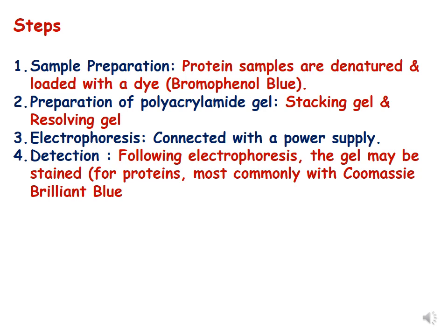The steps for performing PAGE begin with sample preparation: the protein samples are first denatured and loaded with a dye, which is generally bromophenol blue. The second step is preparing the polyacrylamide gel. There are two types of gel in PAGE: stacking gel and resolving gel.